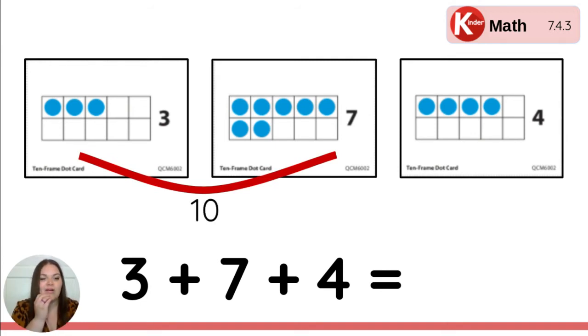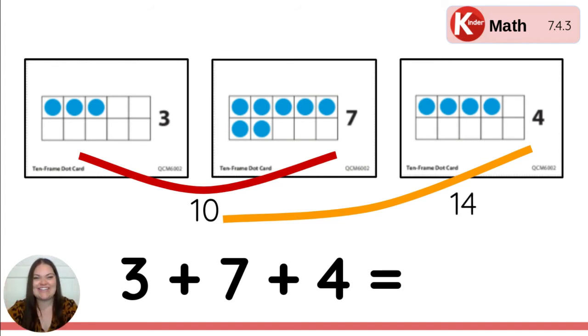Okay, now we have this four. Wait. This is like doing 10 and some more. If we know that three and seven make 10, now we're adding together 10 and four. What does 10 and four more equal? Yeah. Fourteen. Yes. Very good. Let's read our number sentence at the bottom together. Ready? Three plus seven plus four equals 14.